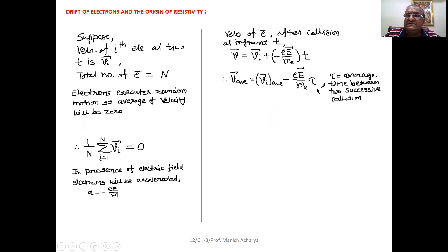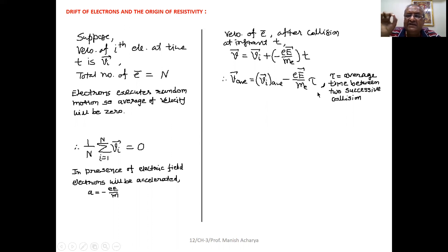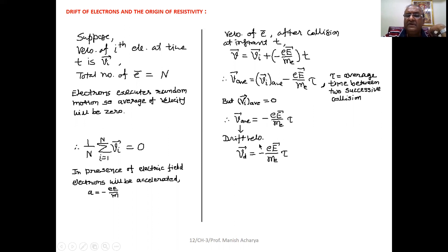This tau is known as the relaxation time — it is nothing but the average time between two successive collisions. Because the velocity is taken as an average, the time also has to be averaged. So tau is the average time between two successive collisions. We already discussed that V_i average equals zero, so we can simply write: V average equals minus eE upon m_e into tau.